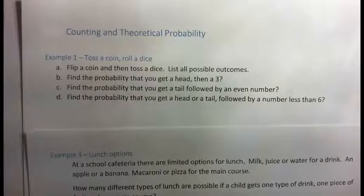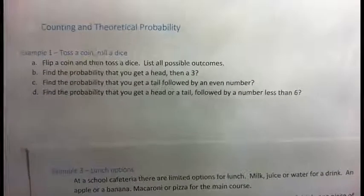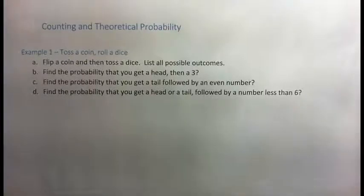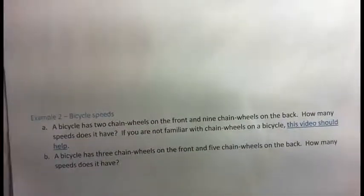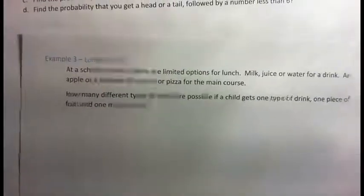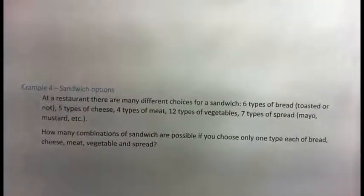In this video we are going to look at counting methods and theoretical probabilities. We'll do four examples: toss a coin, roll a dice, bicycle speeds, lunch options, and sandwich options.